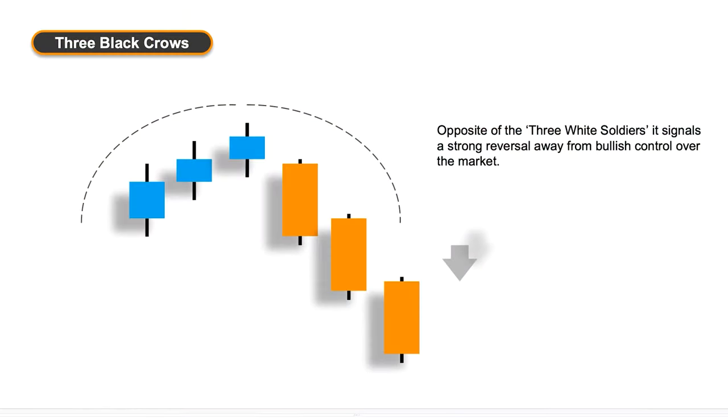The opposite of the three white soldiers is what we call the three black crows. The three black crows act in the exact same way. We've seen an uptrend and the momentum in that uptrend is slowing — we start to see smaller body candles and some indecision — and then we get three big downward candles in a row. That suggests the upward movement is gone, the sellers have come back into the market, and we're looking at a potentially longer-term downtrend. So again a great opportunity to potentially place a sell trade.